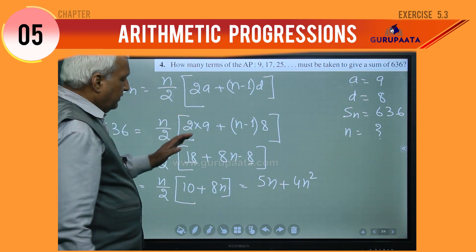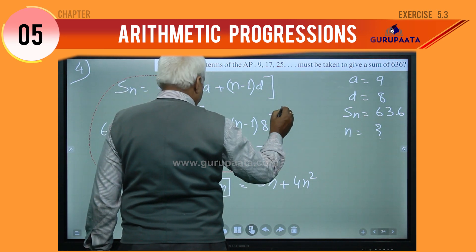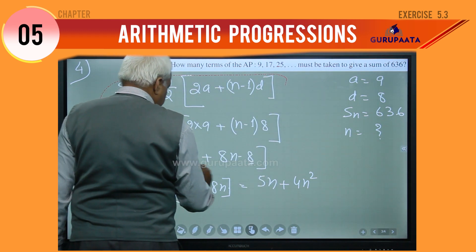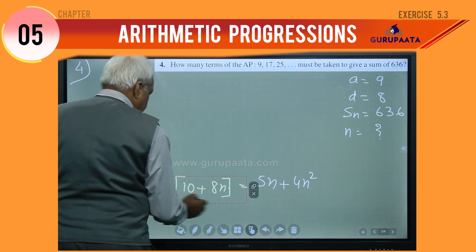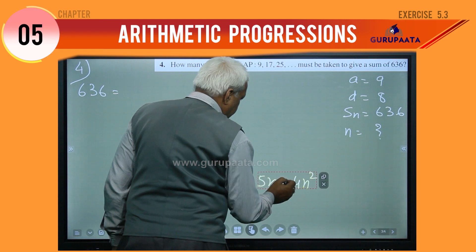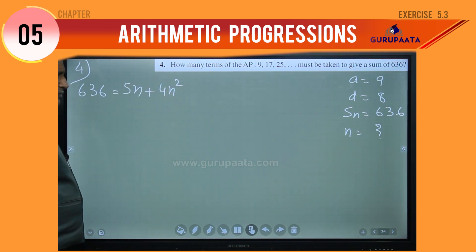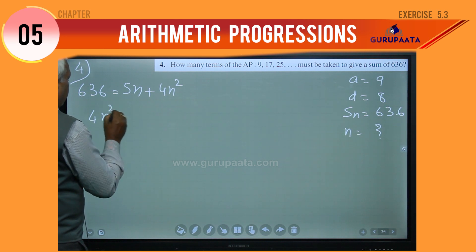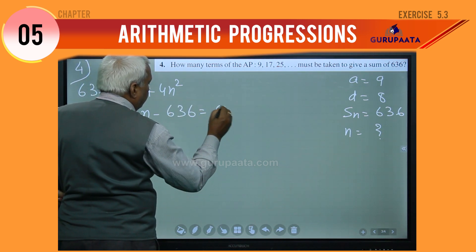Now I need some space, so I will erase some data from the board and keep only the last line. Bringing all the terms to the left-hand side, we can write: 4n squared plus 5n minus 636 equal to 0.